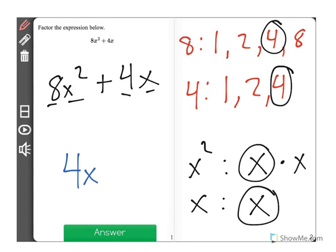And now we have to ask ourselves what do we multiply by to get these terms. So 4x times what equals 8x squared?